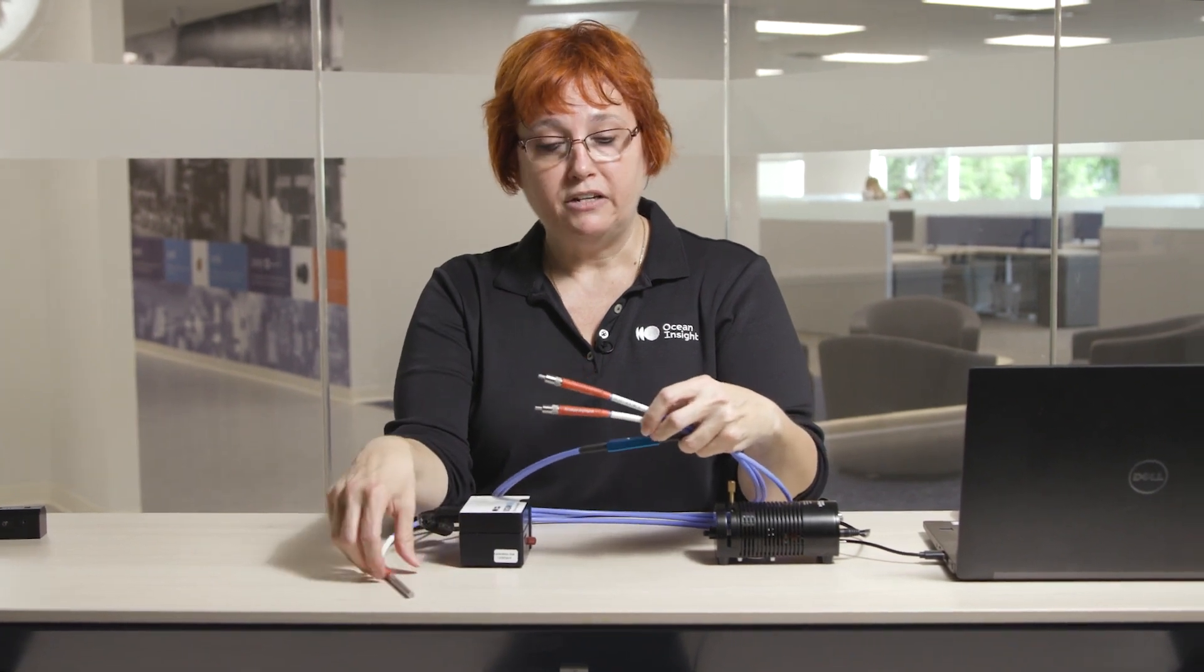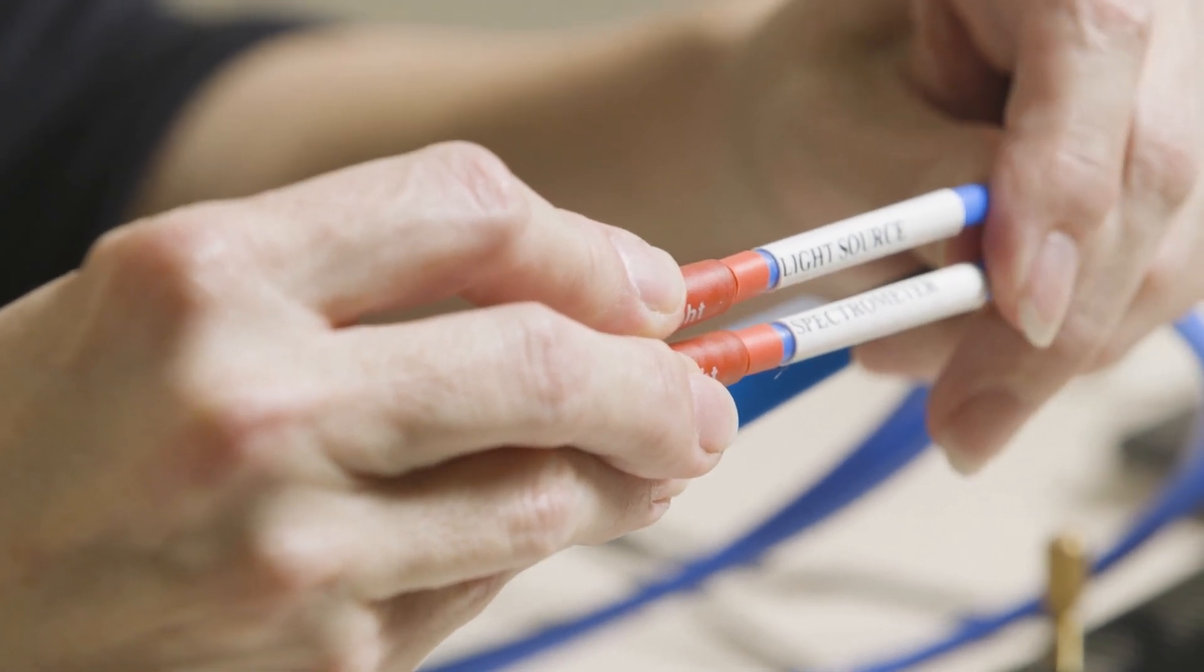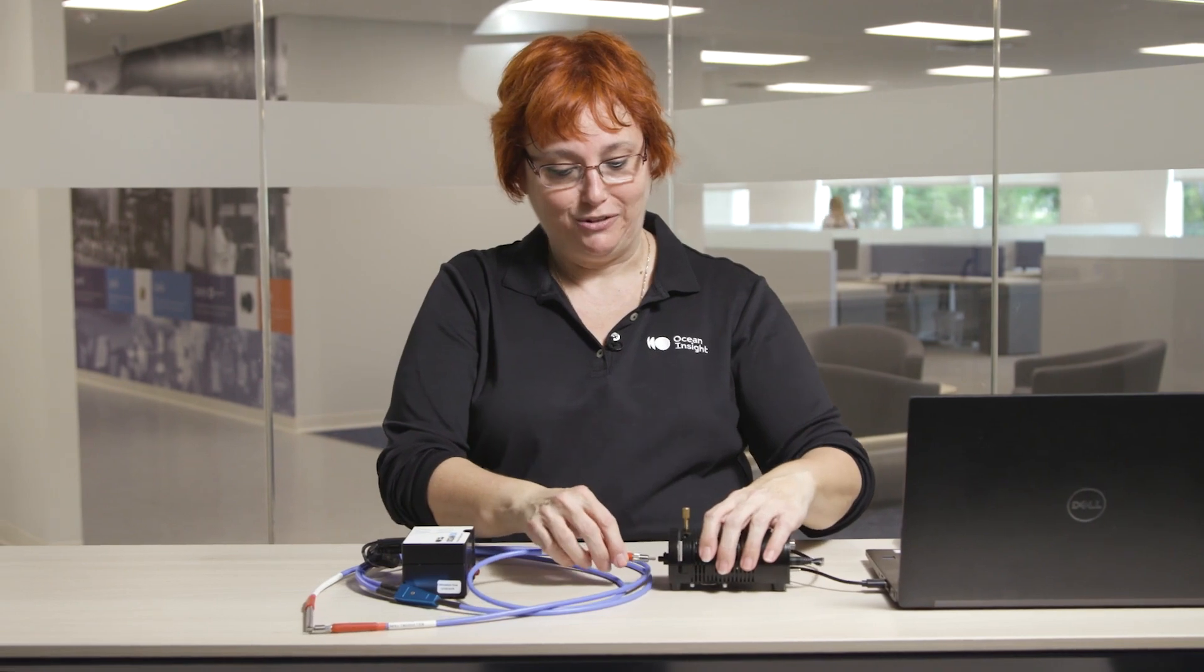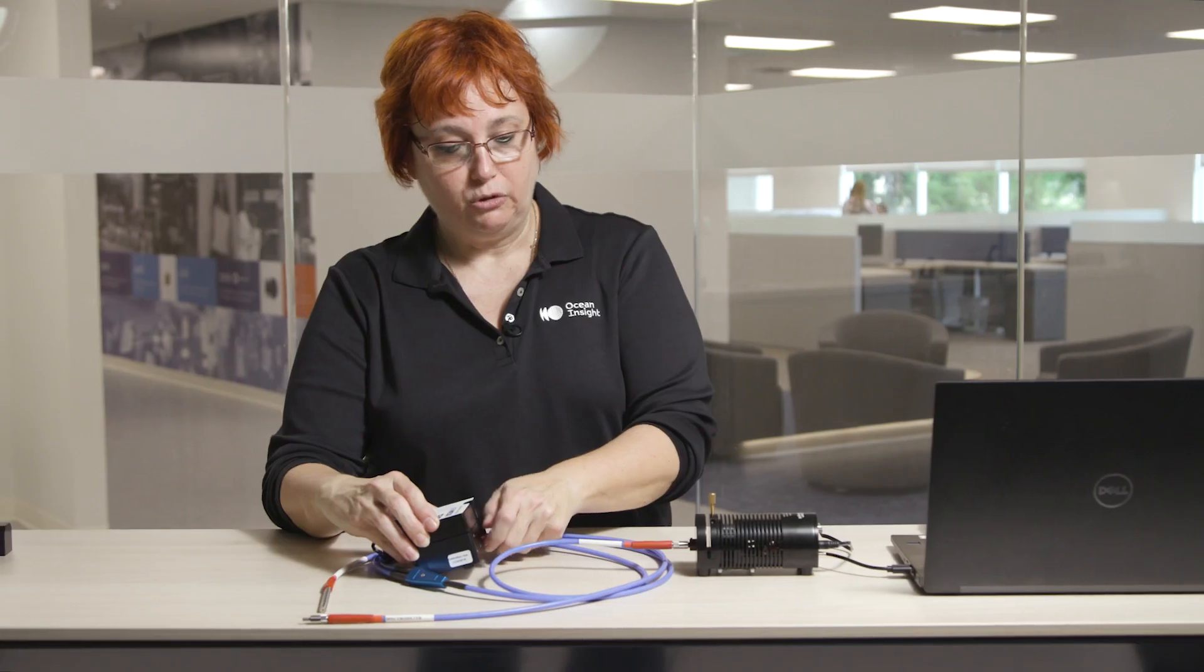The other end of this assembly has two different fiber legs. We're going to take our light source leg and we're going to connect that to our light source. The spectrometer leg is going to go to our spectrometer.